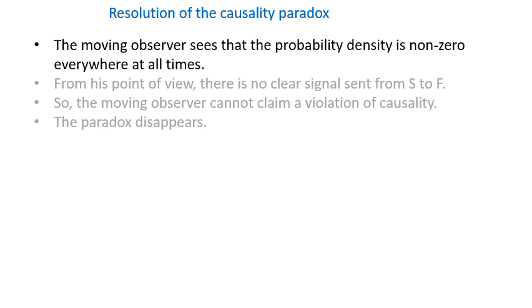This means that the probability of finding the particle at the finish point is always greater than zero. In other words, there is no well defined signal coming from s to f. This observation suggests another resolution of the causality paradox. In the moving frame the probability density is not zero everywhere and at all times. So there is no clear signal. Thus the moving observer cannot claim a violation of causality. And there is no paradox.